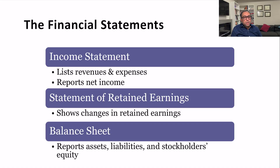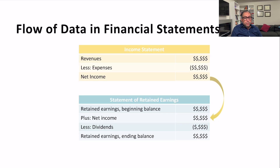We are discussing accrual accounting and income, the last part. In this part we are preparing the financial statements. Before that, in part two of chapter 3, we discussed the adjusted trial balance. After the adjusting trial balance, the next step is passing the closing entries. The income statement lists revenues and expenses and reports net income; the statement of retained earnings shows changes in retained earnings; and the balance sheet reports assets, liabilities, and stockholders' equity. All these accounts are transferred from the adjusted trial balance to those three statements.